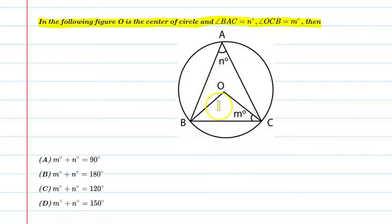O is the center of the circle. Angle BOC is a center angle. Angle BAC is an angle at a point on the circle, whose value is n given. And angle OCB is given as m degrees. The conditions are satisfied, so let's start this question.